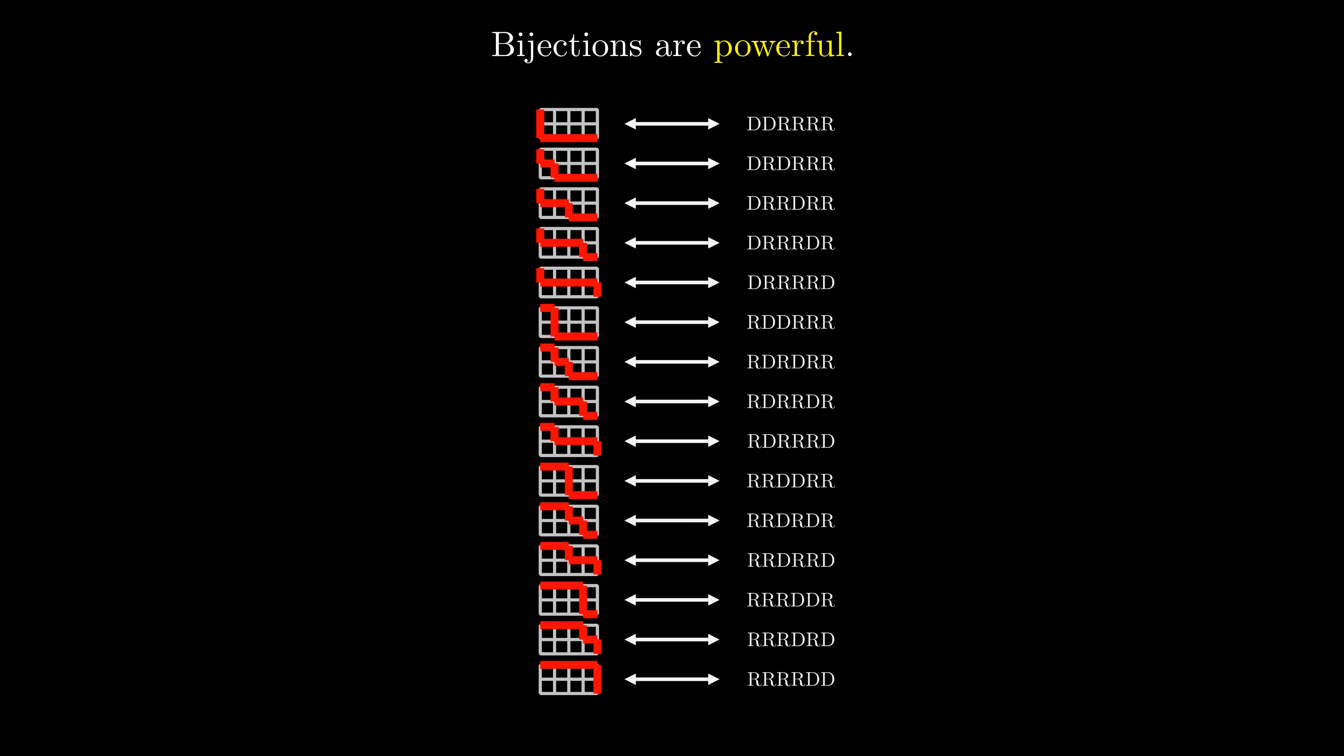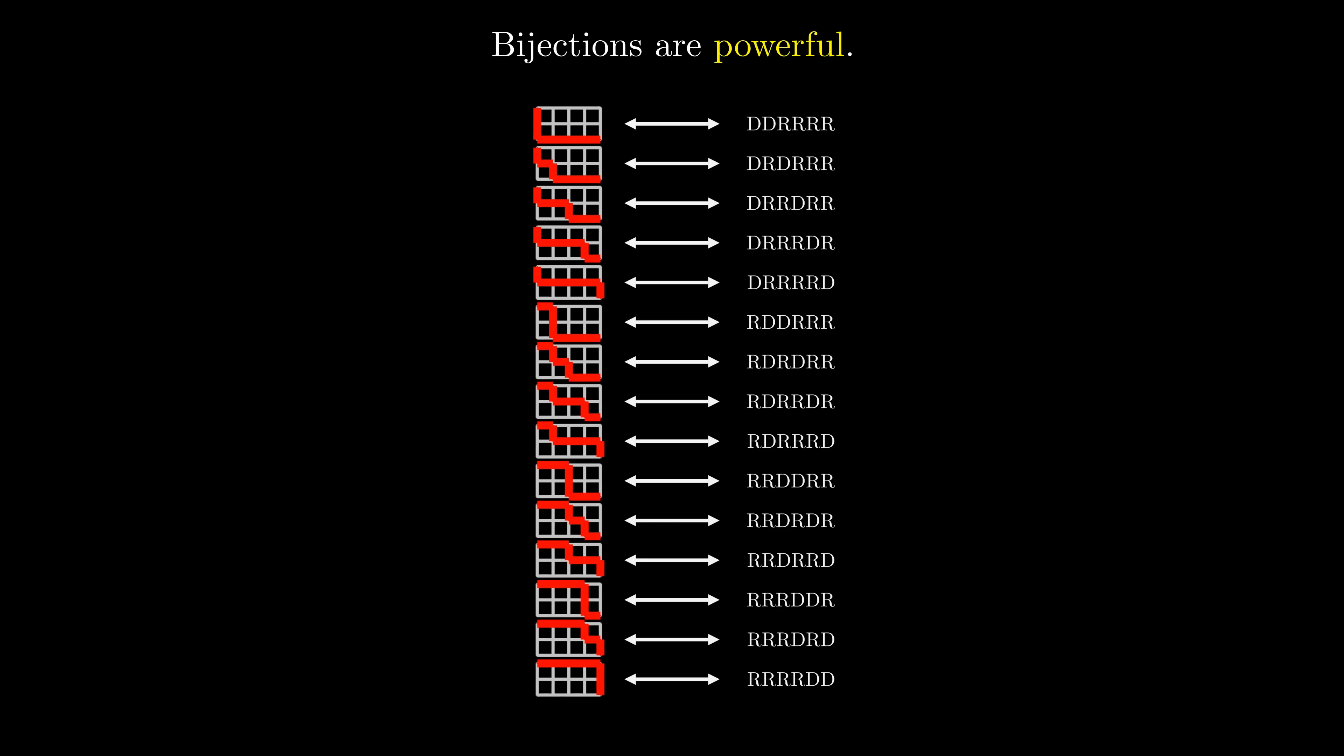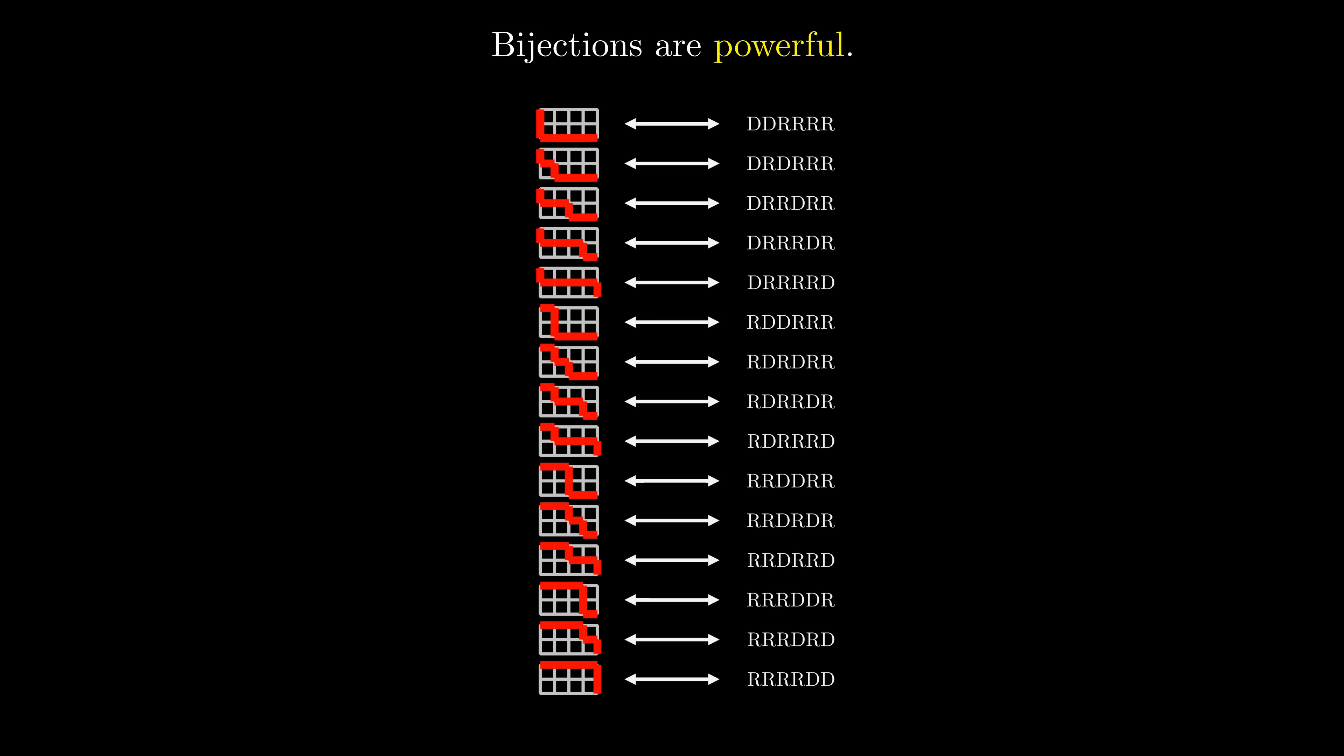To count the paths using combinations, we used a bijection. We had a list of paths and a list of step sequences, and we paired them up in a one-to-one fashion. The paths were very difficult to count, but the step sequences were much easier, and so in this way, we transformed a hard problem into an easier one.